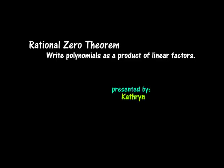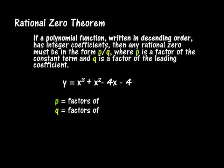Rational zero theorem. Let's talk about the rational zero theorem. If a polynomial function, written in descending order — and that's really important, it has to be in descending order — has integer coefficients, then any rational zero must be in the form p divided by q, where p is a factor of the constant term and q is a factor of the leading coefficient.